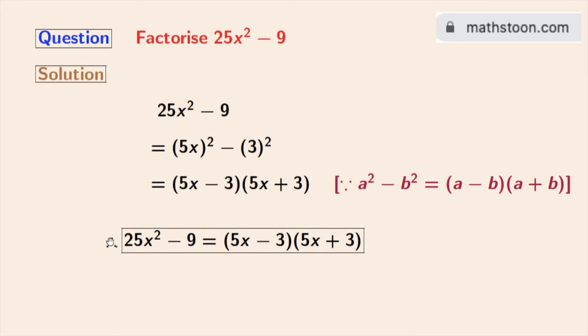So finally we get 25x² minus 9 is equal to 5x minus 3 times 5x plus 3. This is our desired factorization.